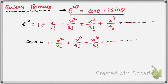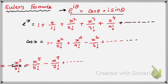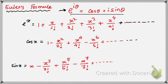And the next result is: sin x is equal to x minus x cubed by factorial 3 plus x to the power 5 by factorial 5 minus x to the power 7 by factorial 7, and so on. So these three results are very important.